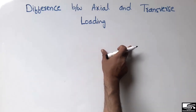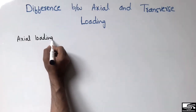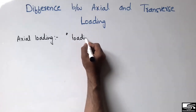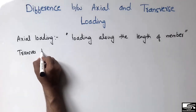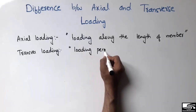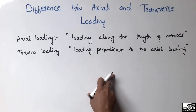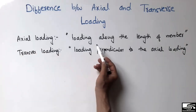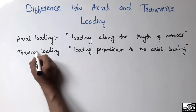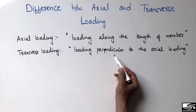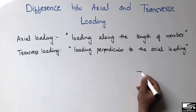First I will define these two types of loading, and then I will explain with examples. Axial loading can be defined as the loading that acts along the length of the member, while transverse loading is the loading acting perpendicular to the axial loading.